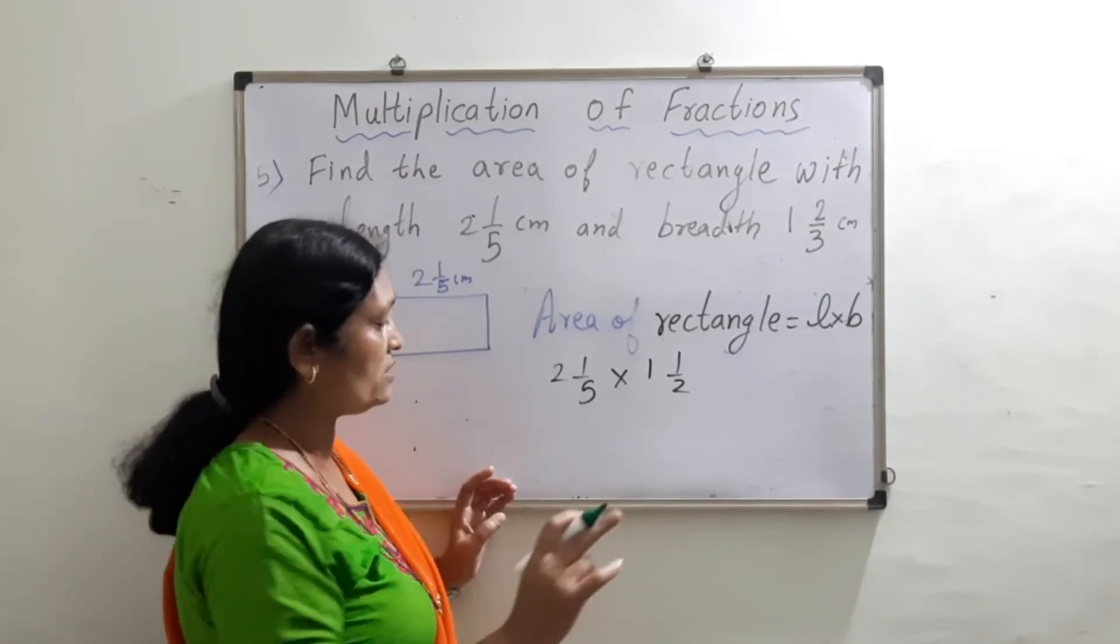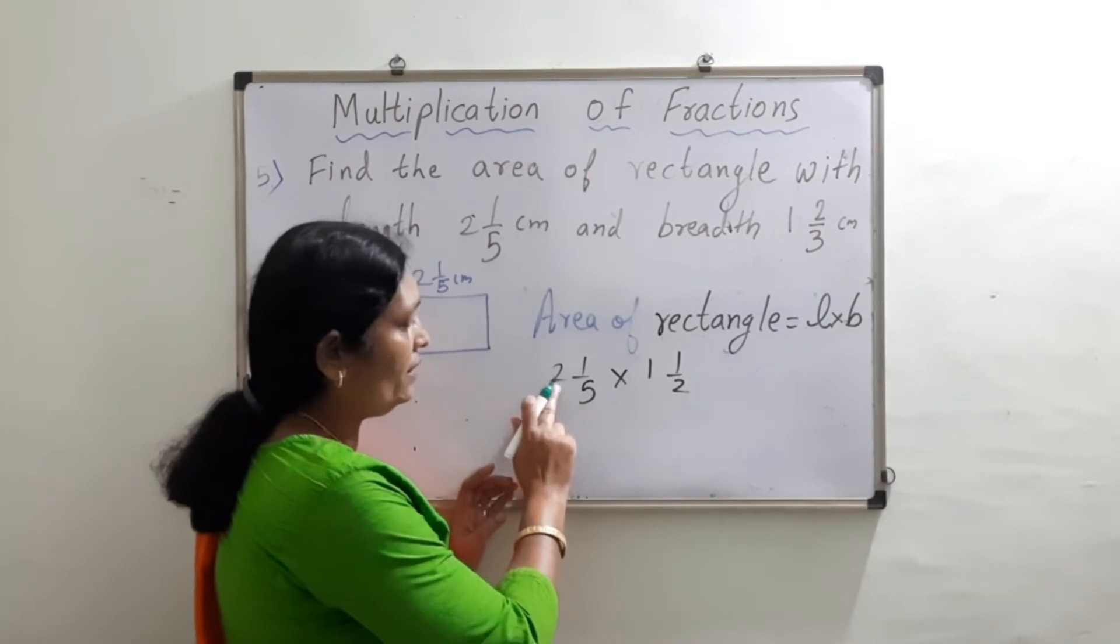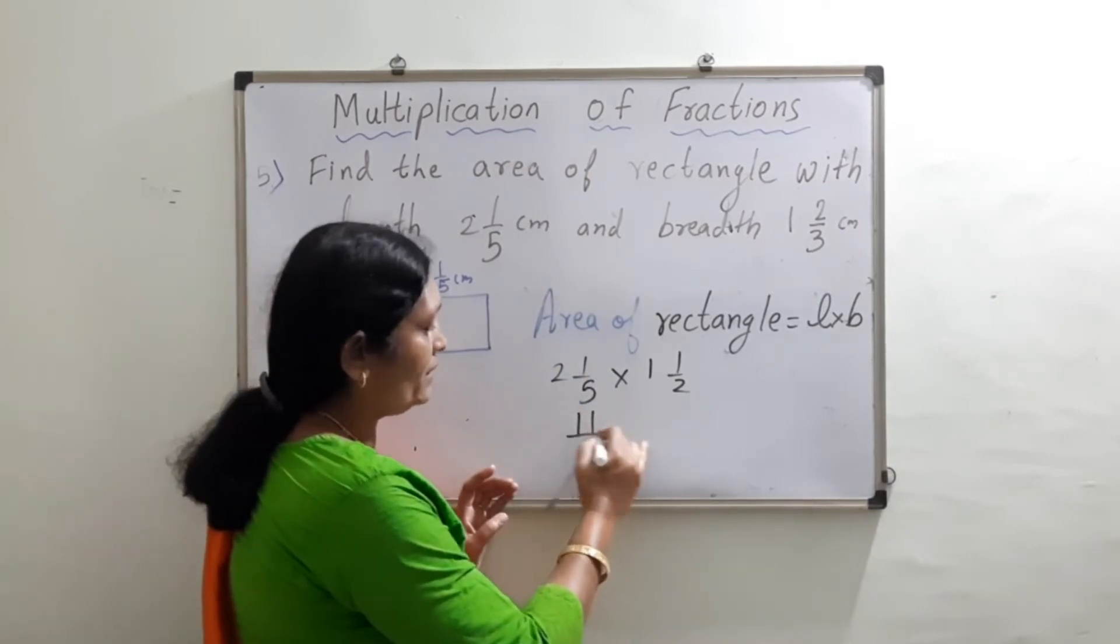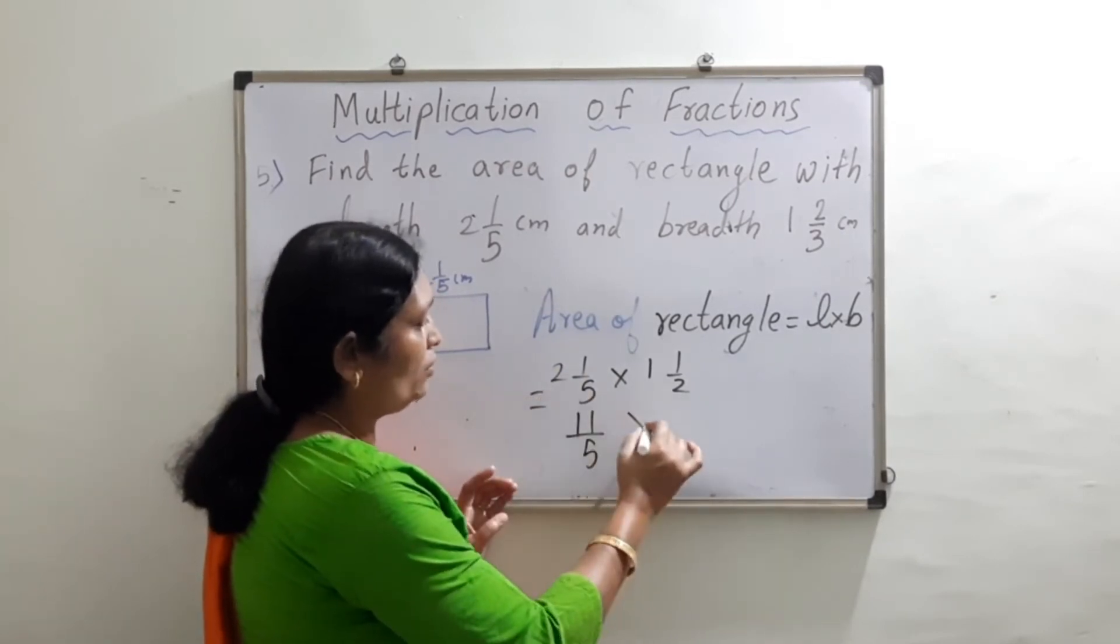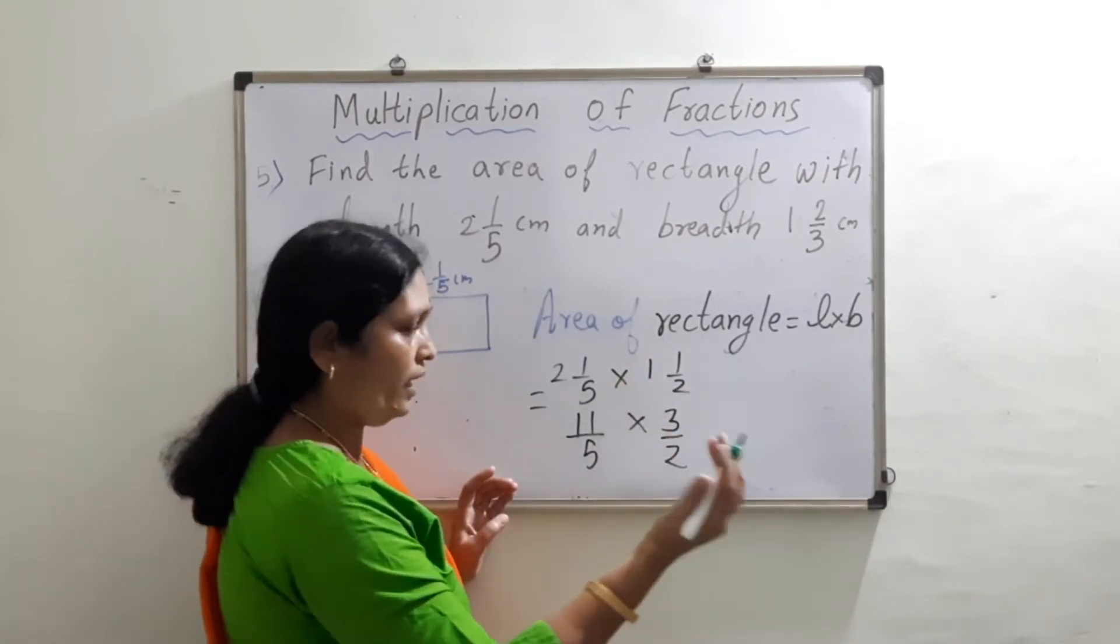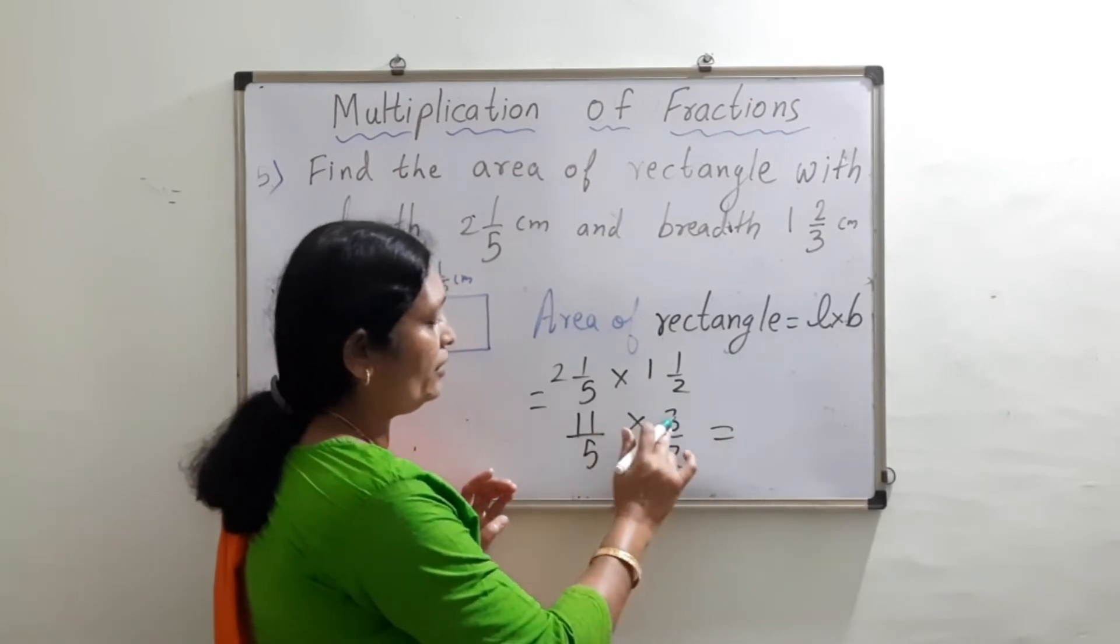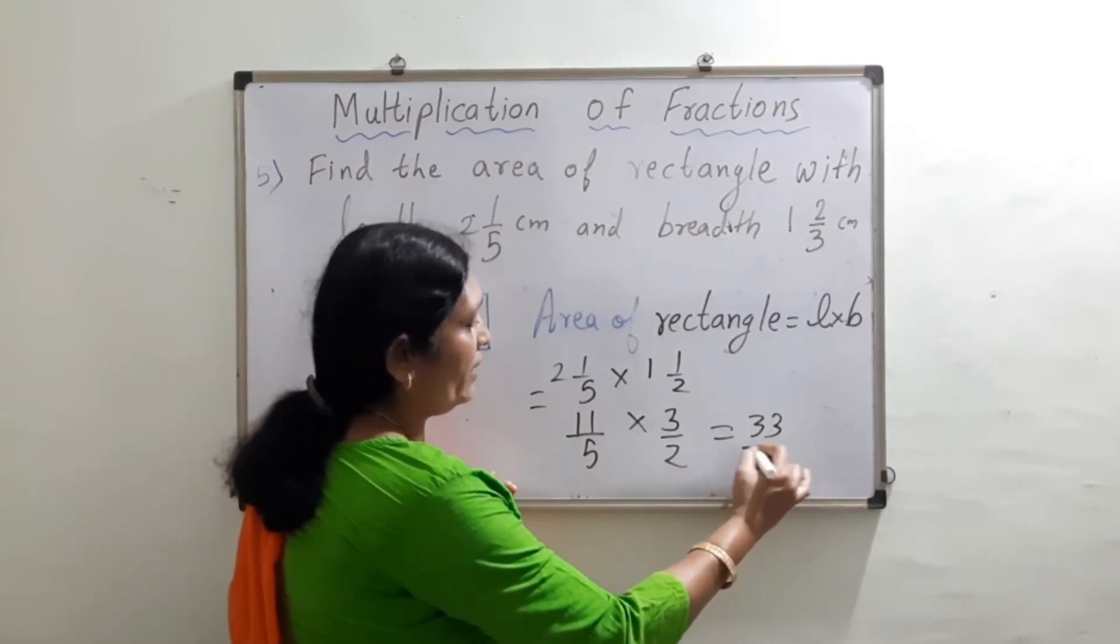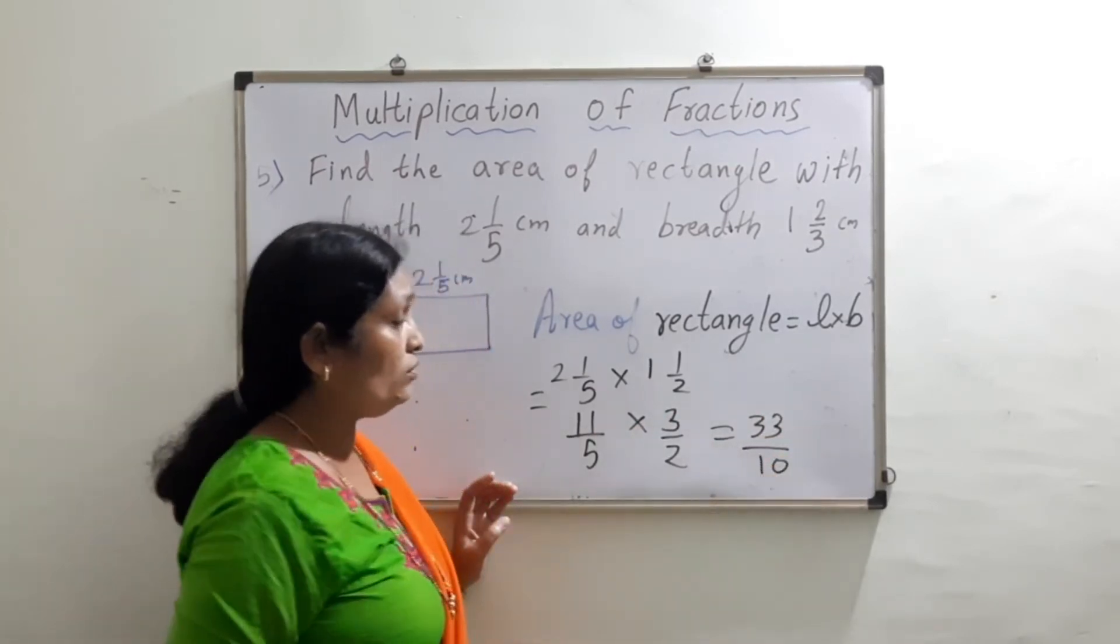5 into 2 is 10, 10 plus 1 is 11, so we get this as 11 upon 5. Into 2 into 1 is 2, 2 plus 1 is 3, so this is 3 upon 2. Now we multiply the numerators: 11 into 3 is 33, and 5 into 2 is 10.